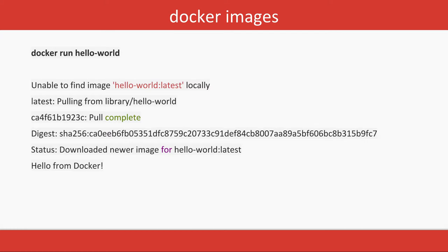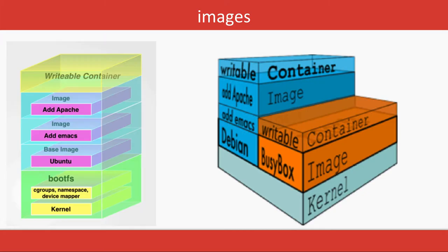We already talked about `docker run hello-world` — it checks if the hello-world image is locally available, and if not, it starts pulling that image from Docker Hub and then runs the container. That is the task of the `docker run` command.